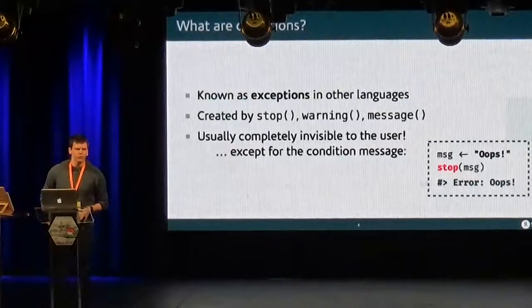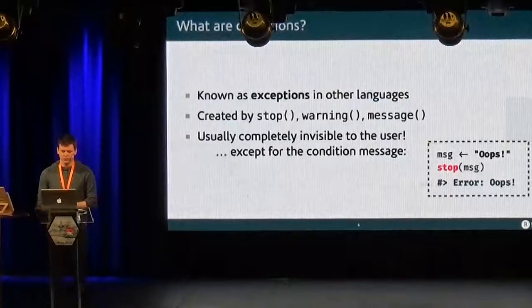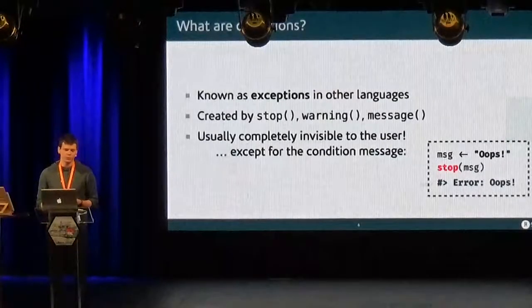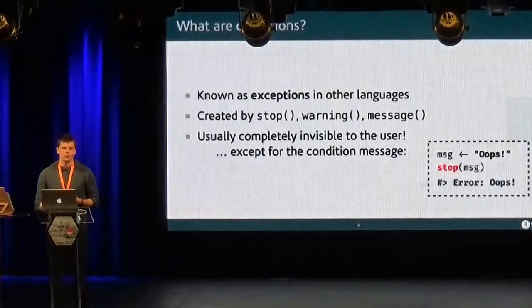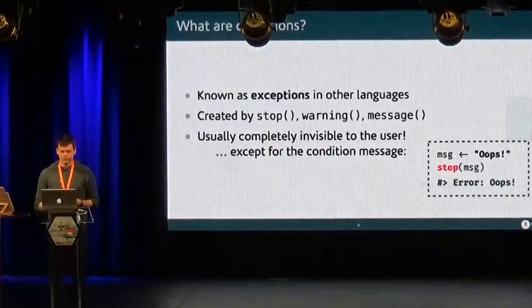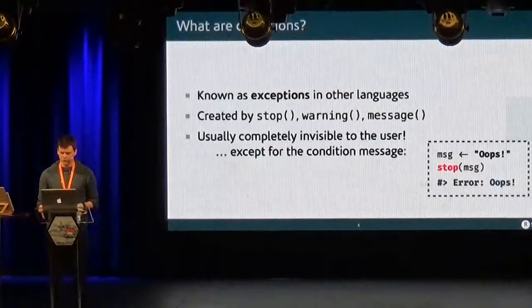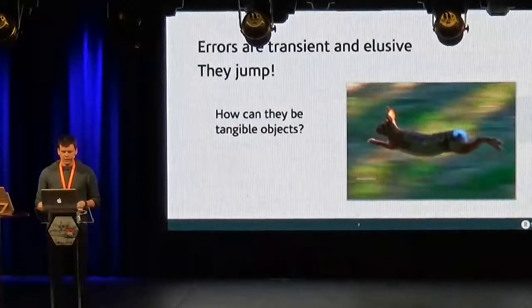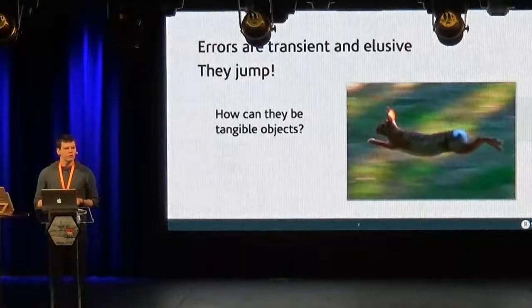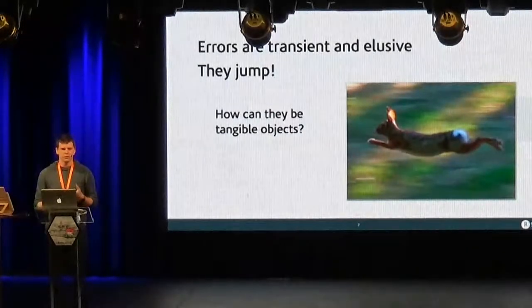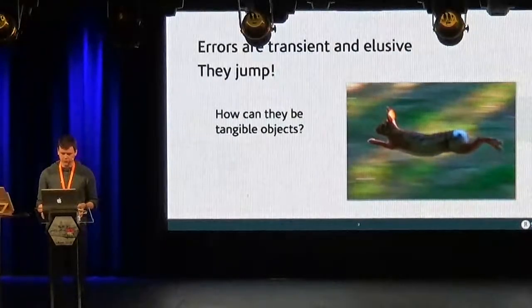So conditions, they are known as exceptions in other languages, but in R it's a bit different because it's not only errors, you can also have warnings and messages. They are usually completely invisible to the user, except for the condition message when you have an error or warning. And the fact that they are kind of transient and elusive, how can you get your hand on a condition object then?